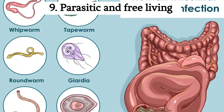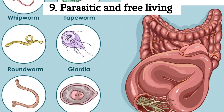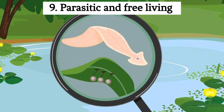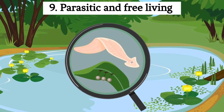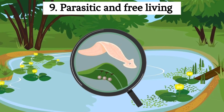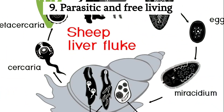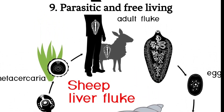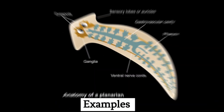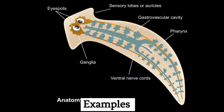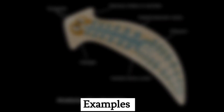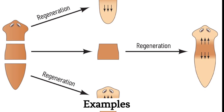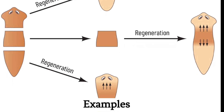Ninth, parasitic and free-living: flatworms display a wide range of lifestyles. While some are free-living and inhabit aquatic or moist terrestrial environments, others are parasitic and can infect vertebrates, including humans. An example is planarians — these are free-living flatworms known for their remarkable regenerative abilities and are often used in scientific studies.